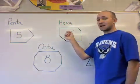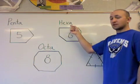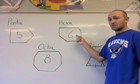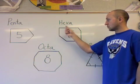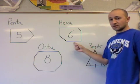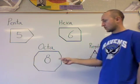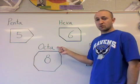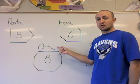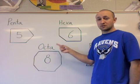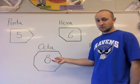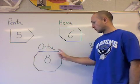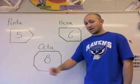Next we're going to look at a hexagon. The prefix hexa means six, so this is going to have six sides: 1, 2, 3, 4, 5, and 6. Then there's the octagon — always an easy one to remember. The prefix octa means eight, like an octopus with eight limbs. An octagon is going to have eight sides: 1, 2, 3, 4, 5, 6, 7, and 8.